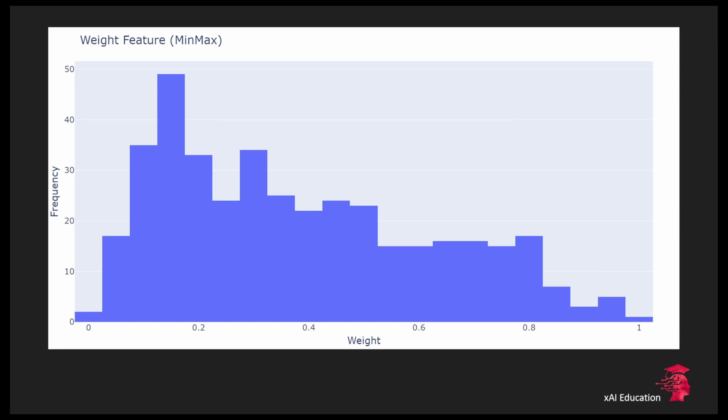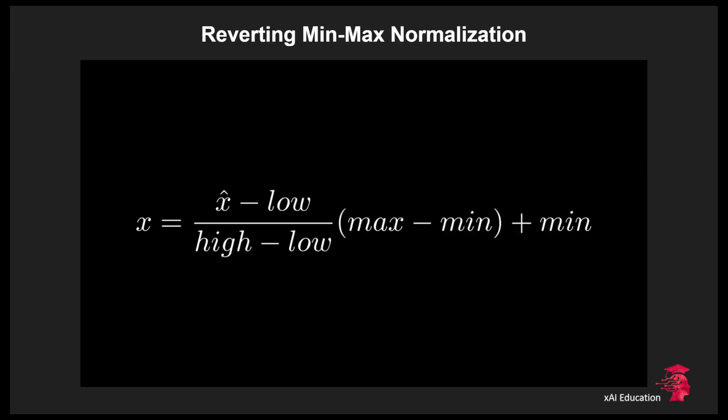Sometimes we wish to undo a transformation in order to get the original values and we can do this in the following way. Well this is the formula for reverting the min-max normalization. You just have to switch low and high with min and max. Elegant right?